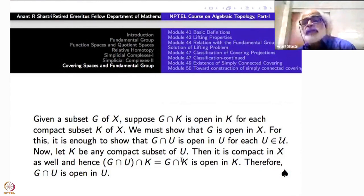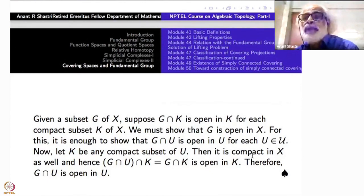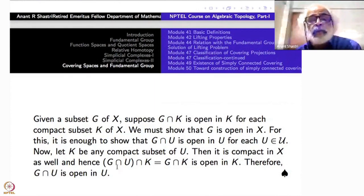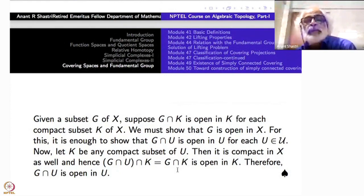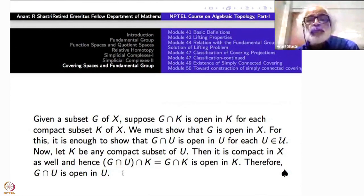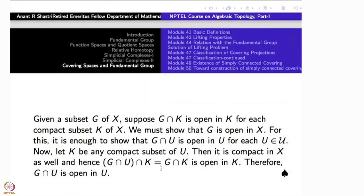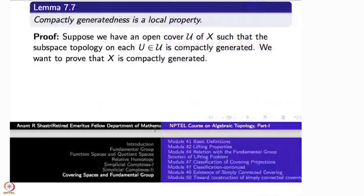Now, let K be any compact subset of U. Then K is compact in X as well, because compactness is not a relative notion. Therefore G ∩ U ∩ K is nothing but G ∩ K, since K is already a subset of U. This is open in K. Therefore G ∩ U is open in U. So compactly generatedness is indeed a local property.